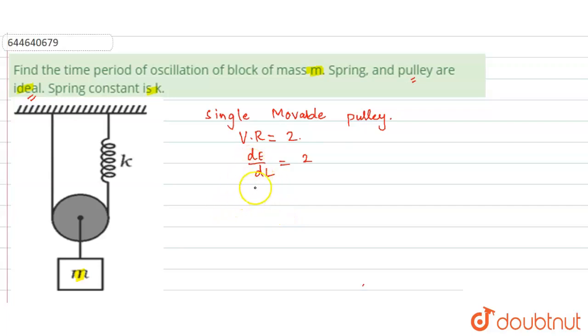So that means if displacement of load is simply equals to x, the effort has to move a distance 2x. What is the meaning of this? That if we move this load through a distance x, this spring will have to move a distance 2x. So this is the meaning of velocity ratio. We will use this later.